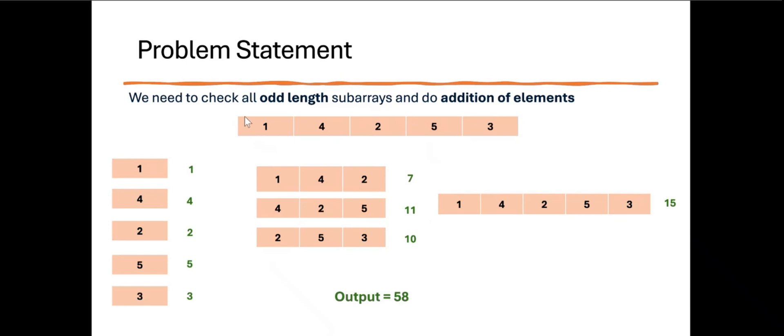One way is to check all odd length subarrays, do the addition of elements in each, and return the total. But that will be inefficient — if the array has many numbers like 100k elements, it will be a slow process. So how can we do this efficiently? If we observe that for each number, we find out how many odd length subarrays it appears in, we can use that.